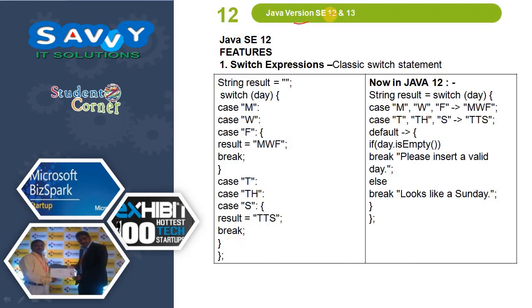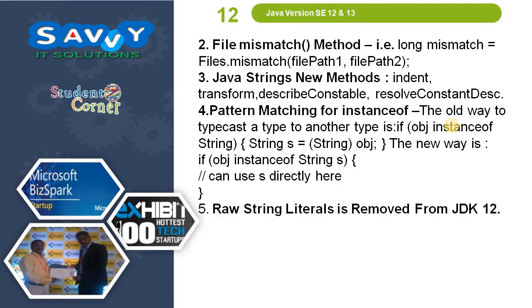In Java 12, switch expressions were introduced as an improvement over the classic switch statement, allowing direct value assignment with parameters separated by a comma. Apart from this, the file mismatch method was added where 'long mismatch = Files.mismatch()'. New Java String methods include indent, transform, describeConstable, and resolveConstantDesc. Pattern matching for instanceof was introduced as the new way to typecast. The raw string literals feature was removed from JDK 12.